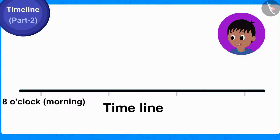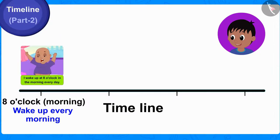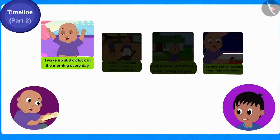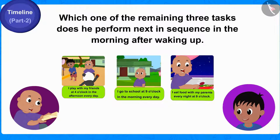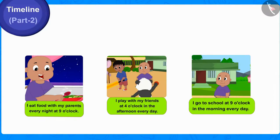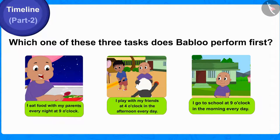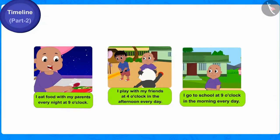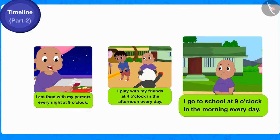He told Bablu that he can write "Wake up every morning" under this. Now, Raju asked Bablu to identify which one of the remaining three tasks he performs next in sequence in the morning after waking up. Children, can you tell according to time which one of these three tasks Bablu performs first? If you wish to, you can stop the video and find the answer. That's correct — Bablu first goes to school at 9 o'clock in the morning.